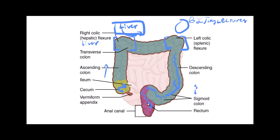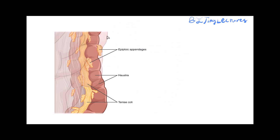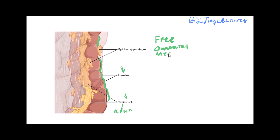Throughout the large intestine there are bumps called haustra, made by the teniae coli — Latin for ribbon — which are strips of smooth muscle that contract to create the colon's characteristic shape. Specifically, there are three teniae coli: the free, the omental, and the mesocolic. Sometimes there can be too much pressure inside the colon, especially in the sigmoid colon, causing the area to weaken and form balloon-like pouches called diverticula — a condition known as diverticulosis.